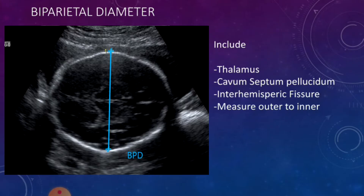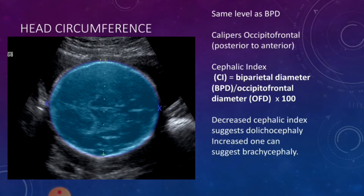The first measurement you're going to take is a biparietal diameter. At that level, you want to put the calipers from the outer cranium to the inner cranium. Once you finish that measurement, you're going to take a head circumference by putting the calipers in the anterior and posterior, or occipital-frontal, areas of the head in the same view, then open the ellipse and measure the circumference.